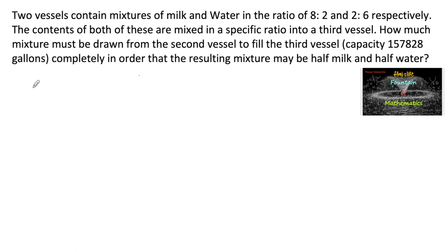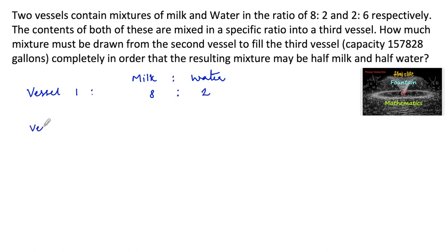So here it's about three vessels. Let's consider vessel 1 and the ratio is about milk and water. In the first vessel it is given 8:2, the second vessel it is given 2:6, and the third vessel the resulting mixture may be half milk and half water, meaning equal ratio — so 1:1 we can consider.